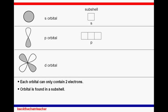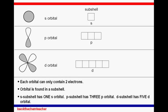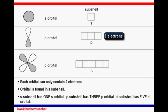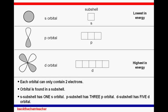The P subshell has three P orbitals. The D subshell has five D orbitals. Hence, the S subshell can take up a maximum of two electrons, the P subshell can take up a maximum of six electrons, and the D subshell can take up a maximum of ten electrons. The S subshell has the lowest energy level, while the D subshell has the highest energy level among these three subshells.